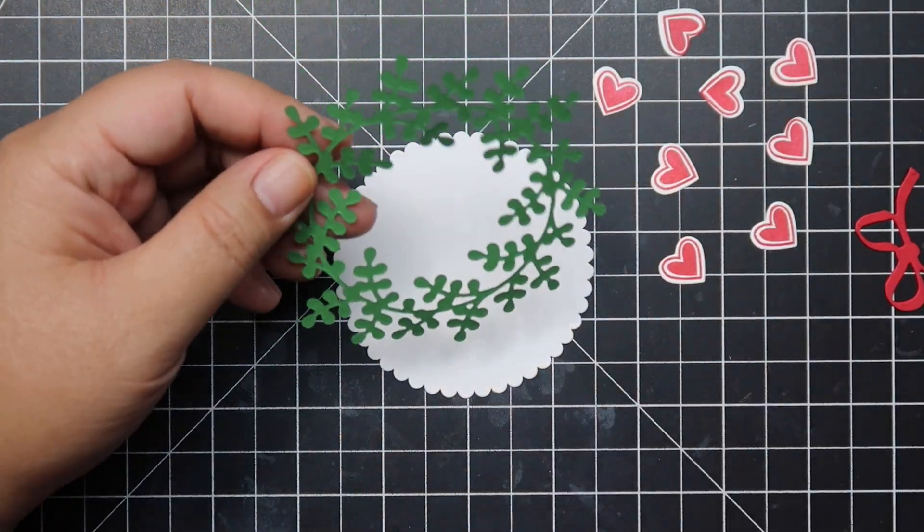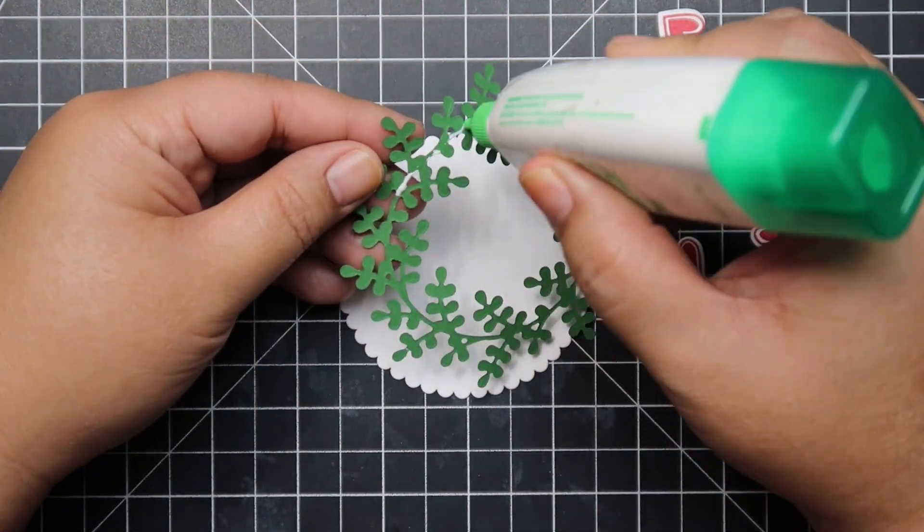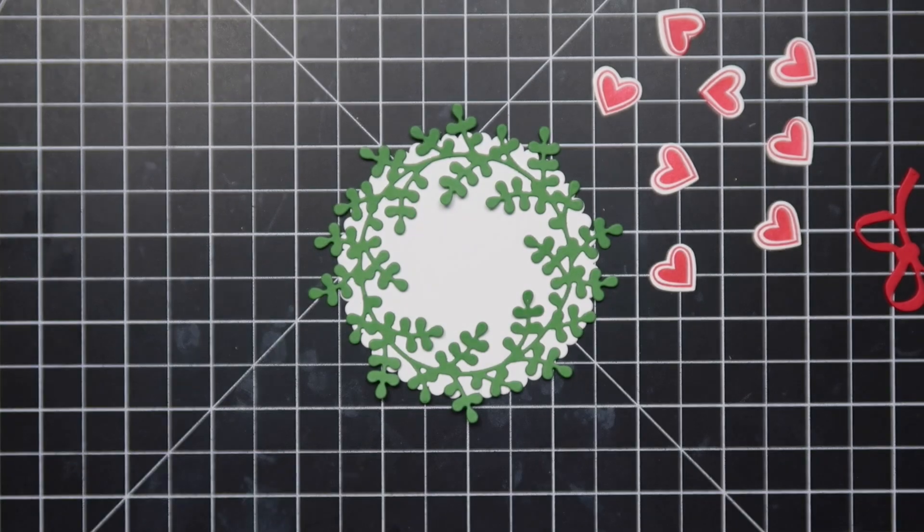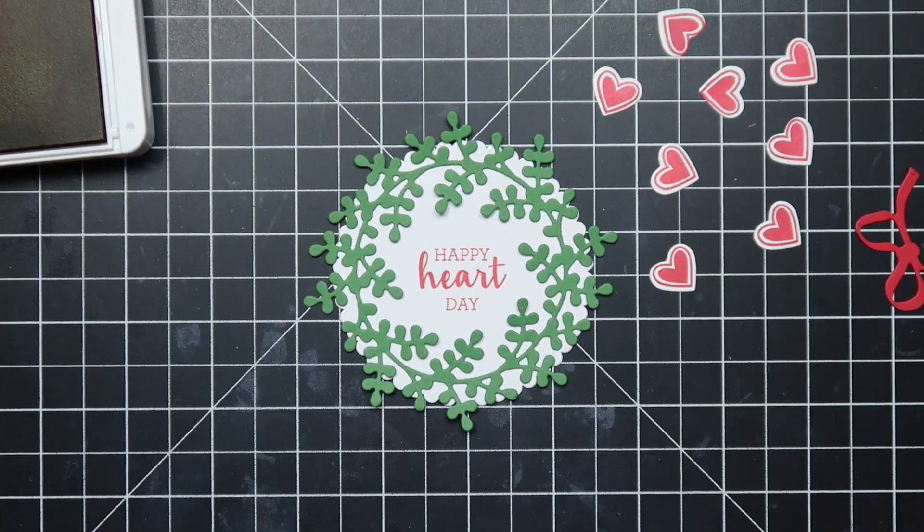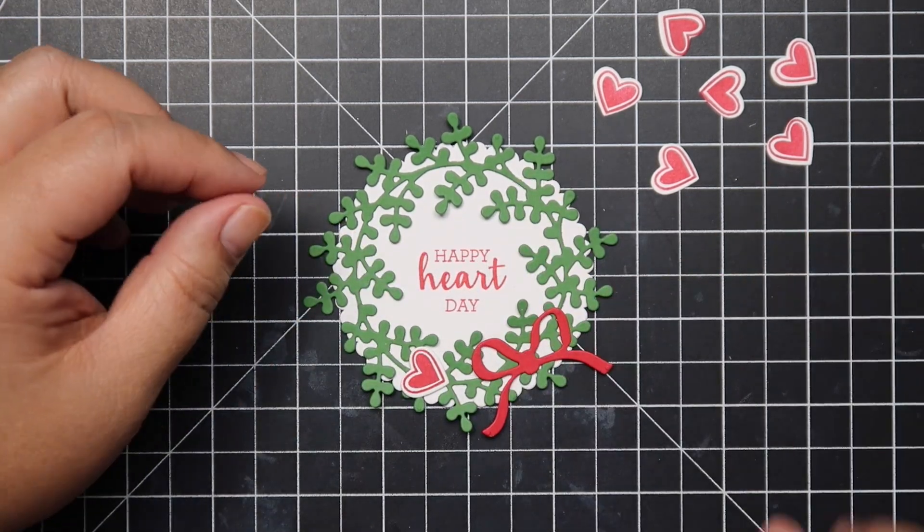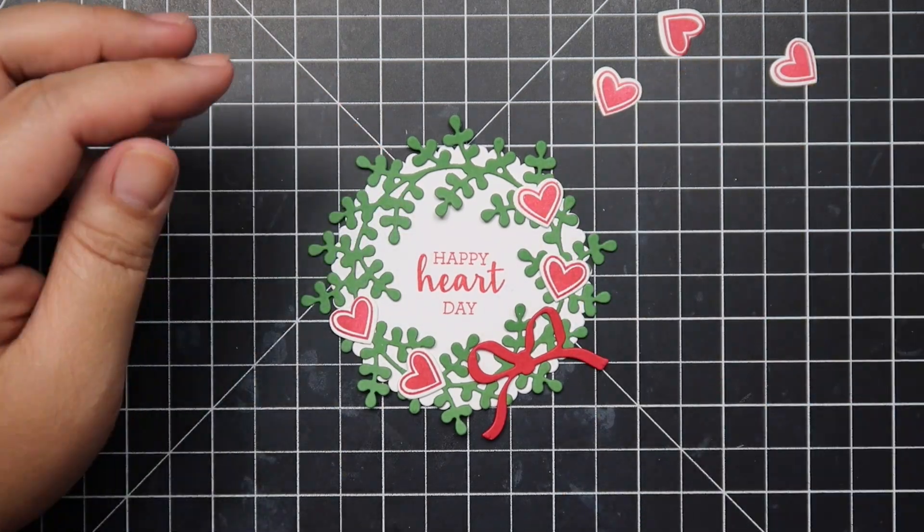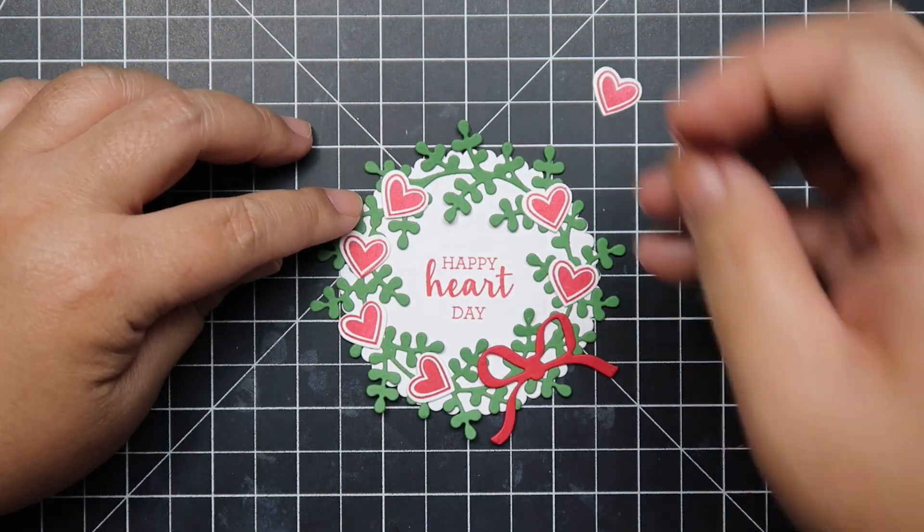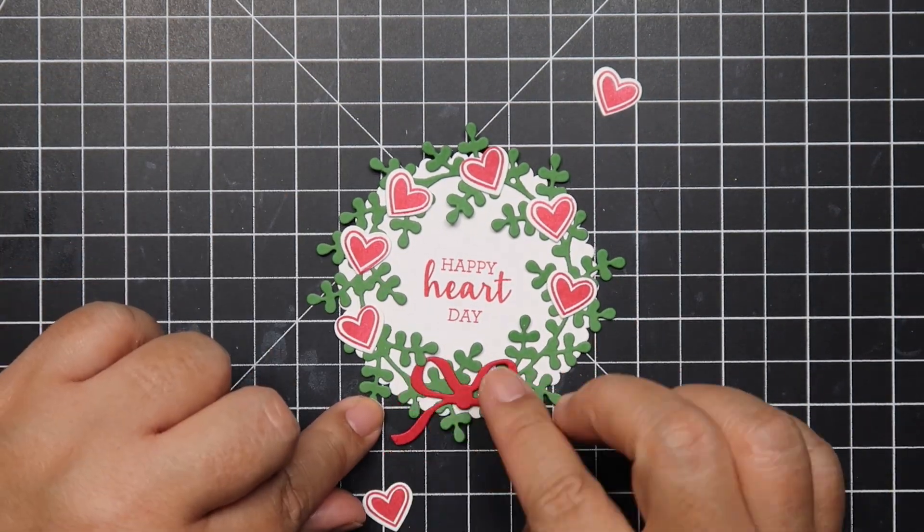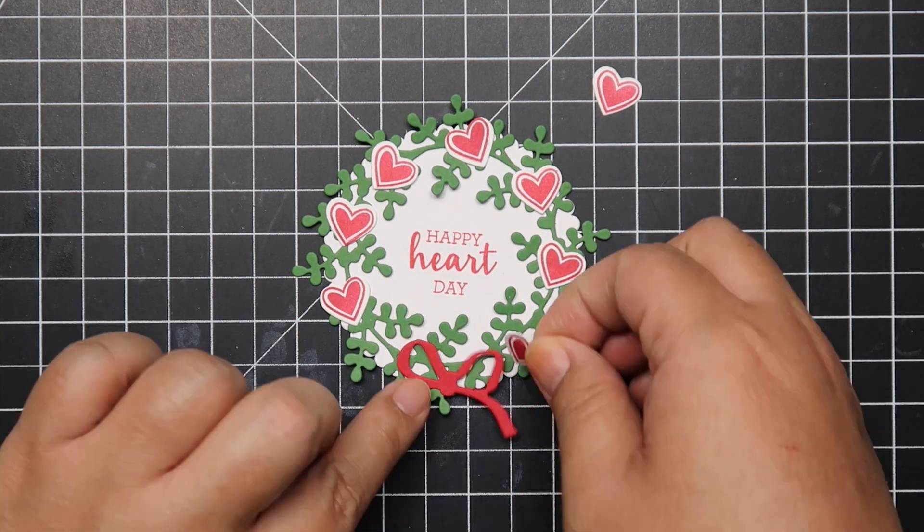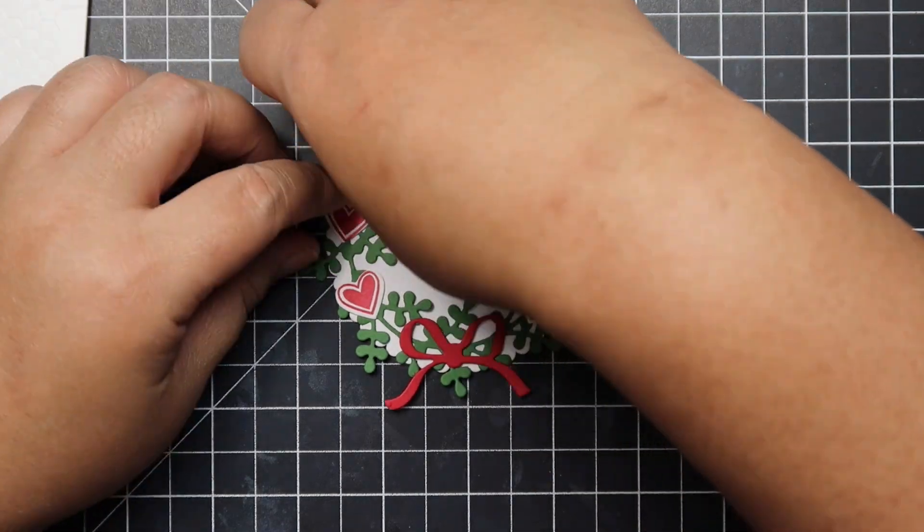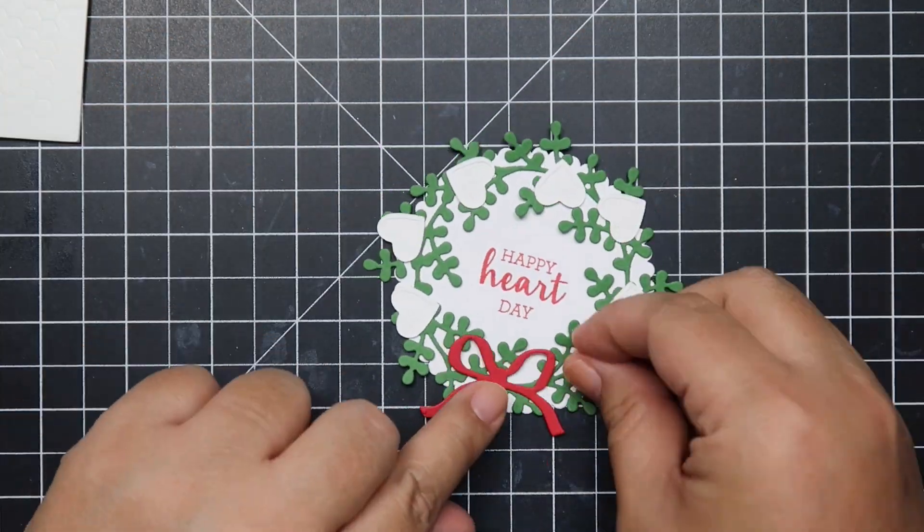Now we're going to move on to our second tag. This is a Valentine's Day tag. Again I chose the same wreath but I did cut the wreaths two of each so that way you can see the variations. I stamped Happy Heart Day with my Real Red ink pad and I'm just going to decorate the wreaths with the hearts. I didn't really like the ribbon off to the side so I decided to put it down at the bottom centered.